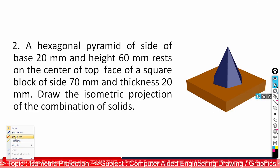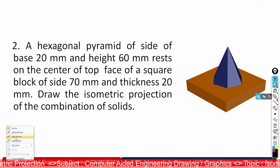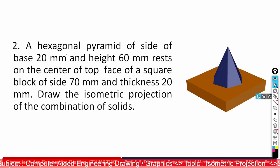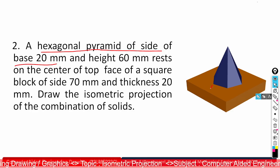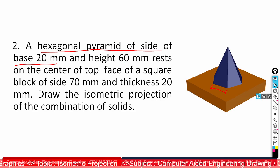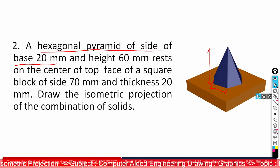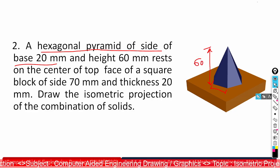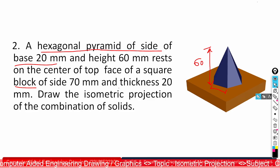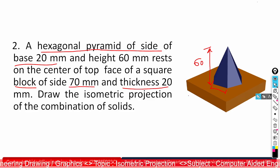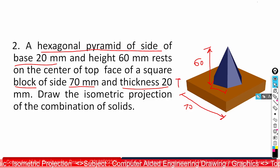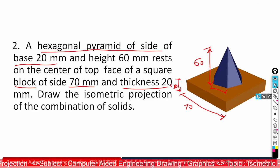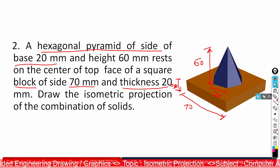It consists of two solid primitives: one is a square block and the other is a hexagonal pyramid. The hexagonal pyramid has a base edge of 20 mm and a height of 60 mm. It is resting on a square block of side 70 mm and thickness 20 mm. The base edge of the hexagonal pyramid is 20 mm.